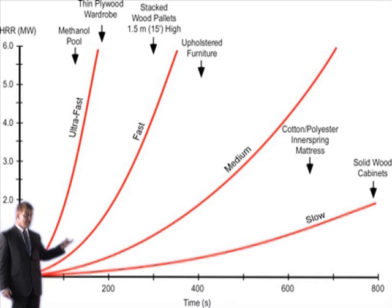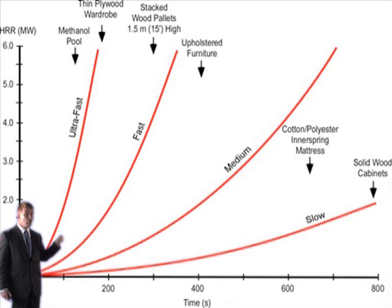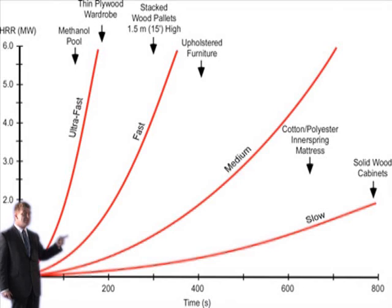This chart shows the heat release rate against time for some materials. For example, a solid wooden cabinet will burn with a slow growth rate, upholstered furniture will burn with a fast fire growth rate, and thin plywood wardrobes burn with an ultra fast fire growth rate. There comes a point in the growth phase at which a certain temperature is reached — normally approximately 600 degrees — at which the whole room becomes involved, and this is a flashover.